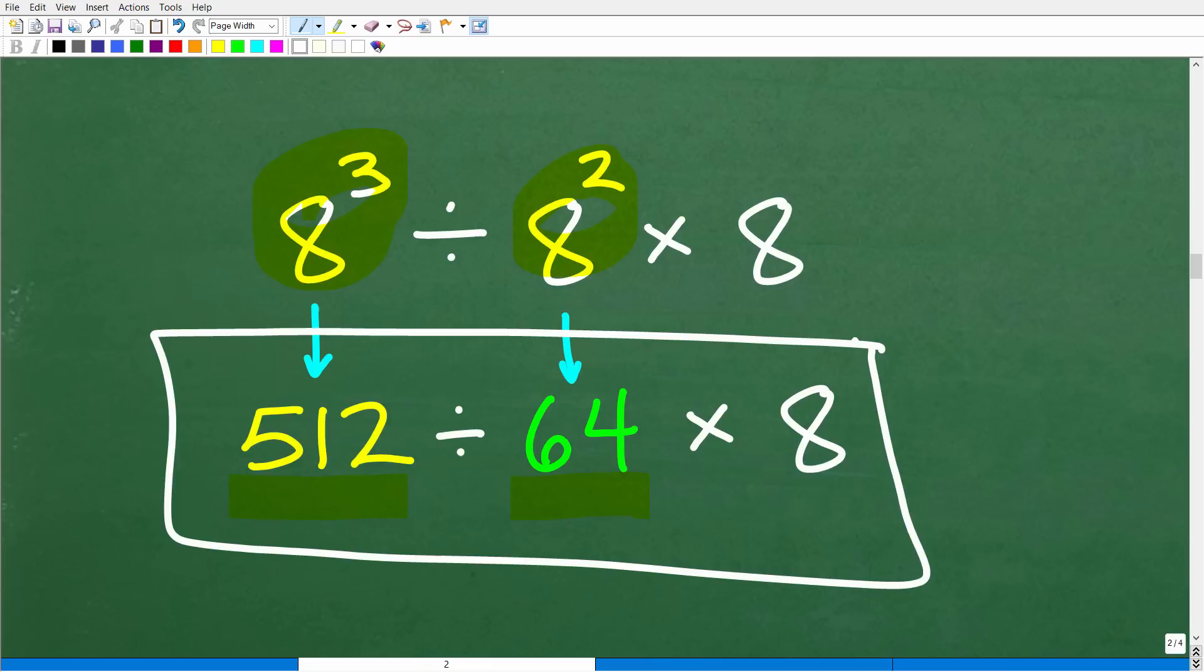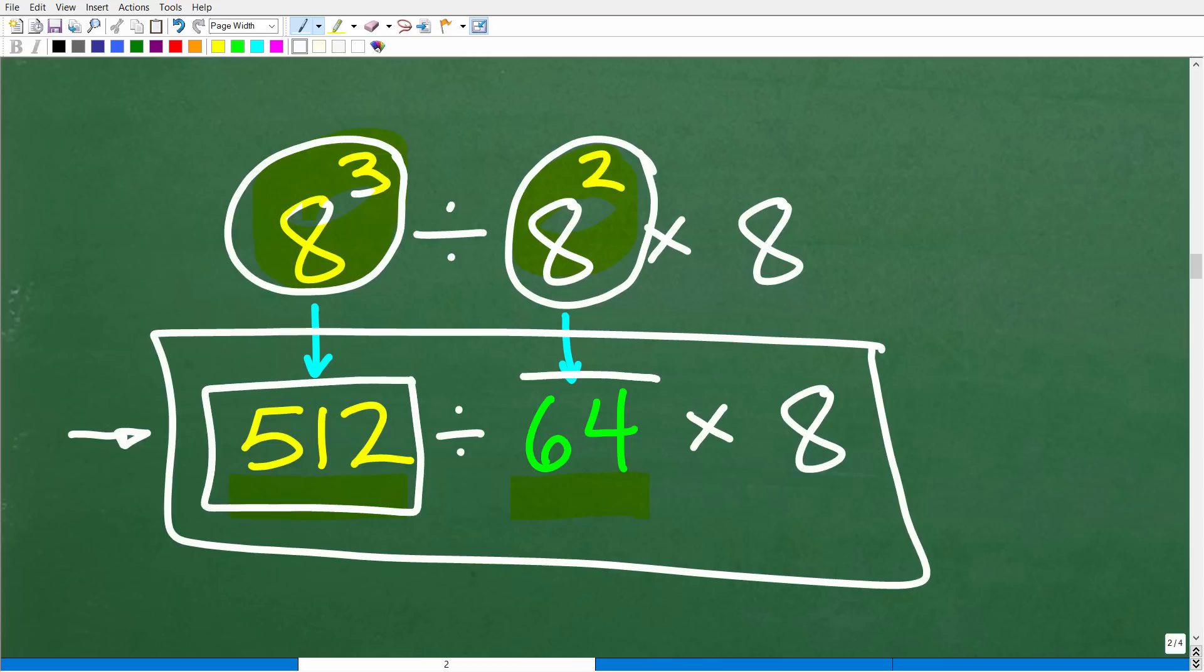Okay, so this might confuse a lot of you, but we don't actually have to evaluate these powers. I'm kind of stumbling on my words here. But as long as we know that 8 cubed is equivalent to 512 and 8 squared is equivalent to 64, whether we have these numbers expressed as powers or actual numbers doesn't make a difference in this particular problem.